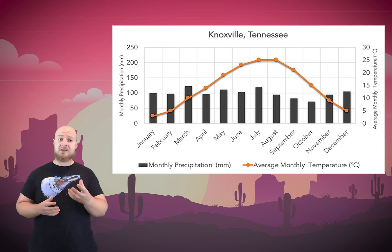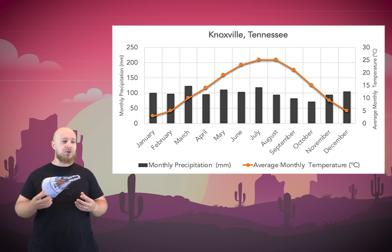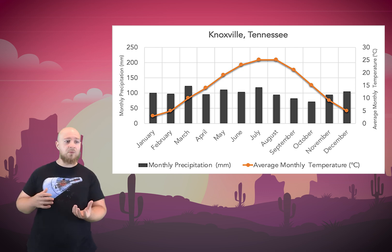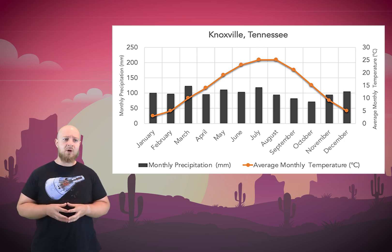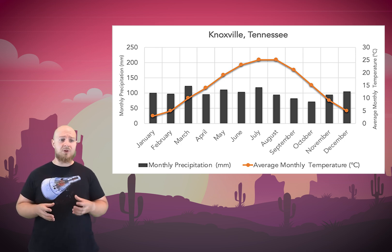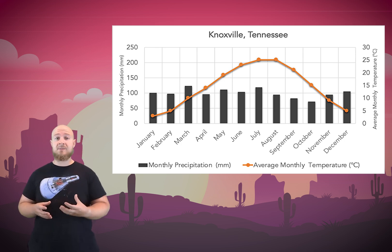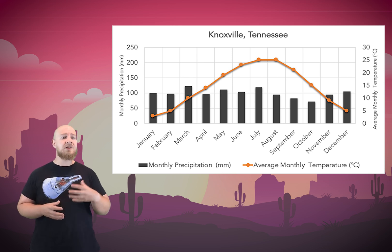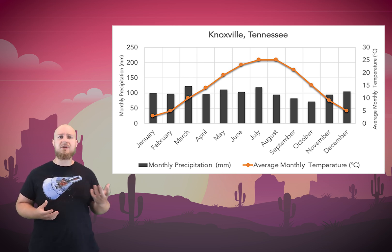Notice how in the deciduous forest biome, temperature tends to be very cold in the winter and relatively hot in the summer. While the deciduous forest does get some precipitation all year round, you would expect to see the most rain during the spring and fall.